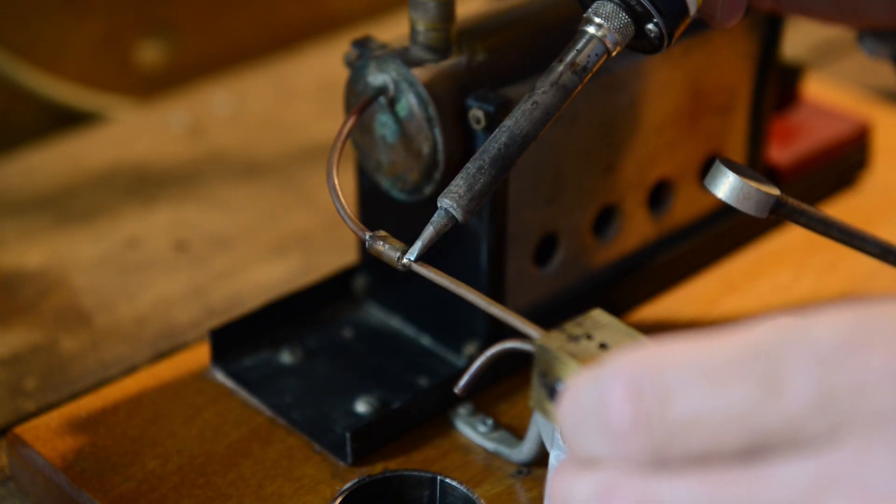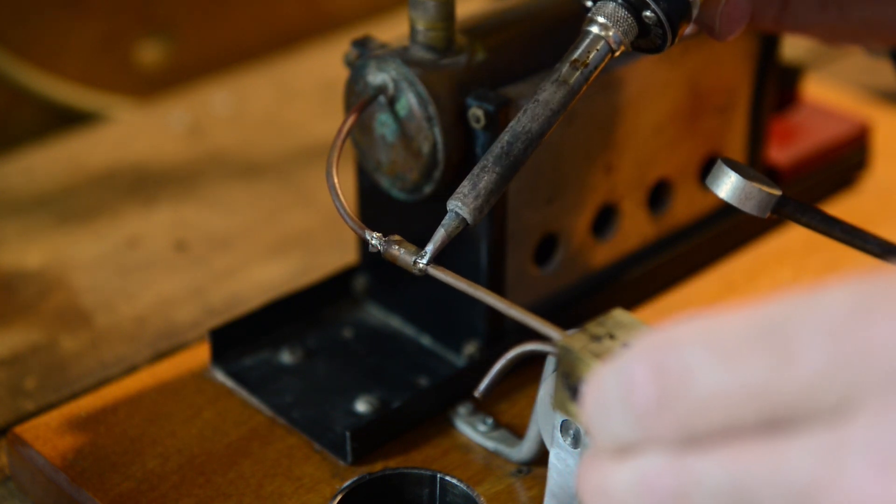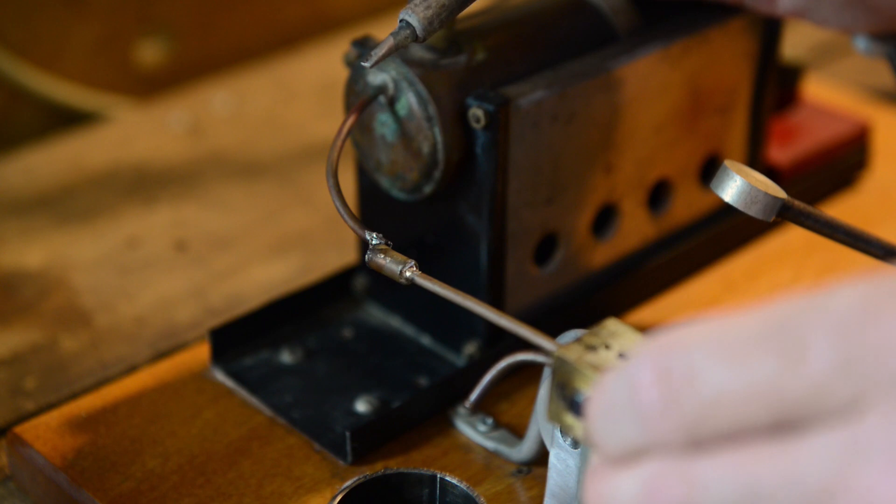Next, I get the soldering iron and heat up the solder around the pipe joiner, and it comes off after some time. Now I will be able to inspect for the blockage.